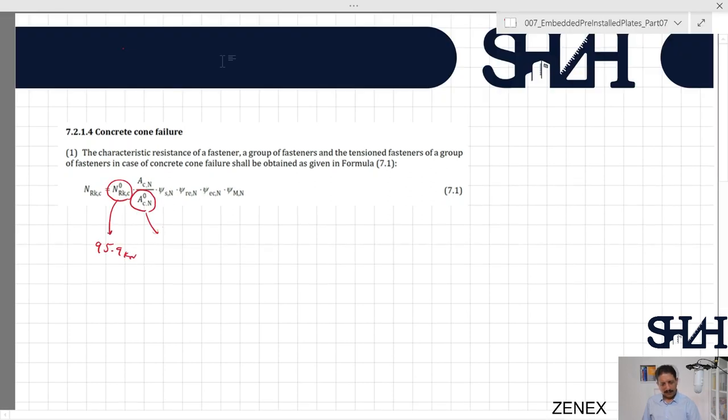To recall what we had earlier, you can check video number three. N_Rk,c,0 value is the same 95.9 kilonewtons, A_c,N,0 is 22,1841 square millimeters, psi_s,N is 0.84.